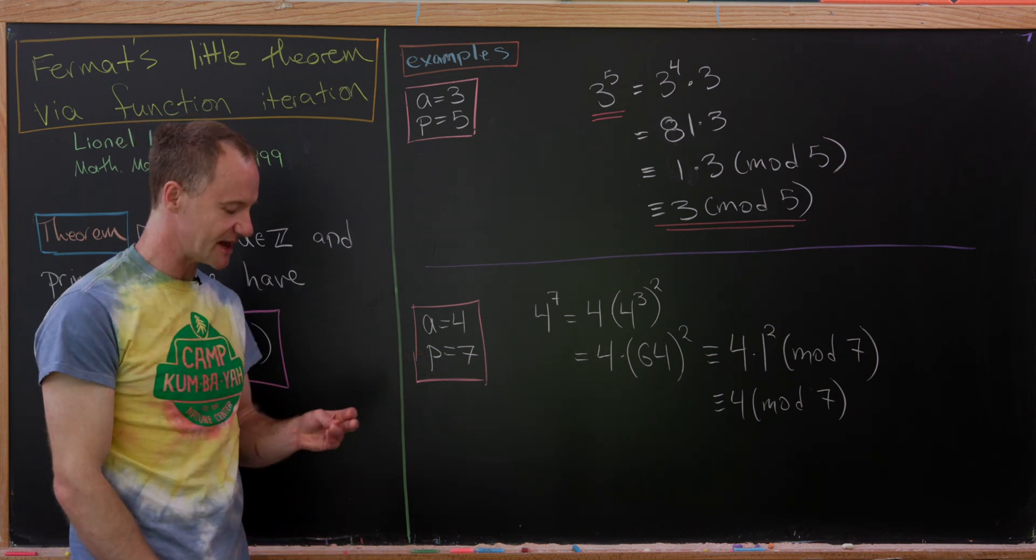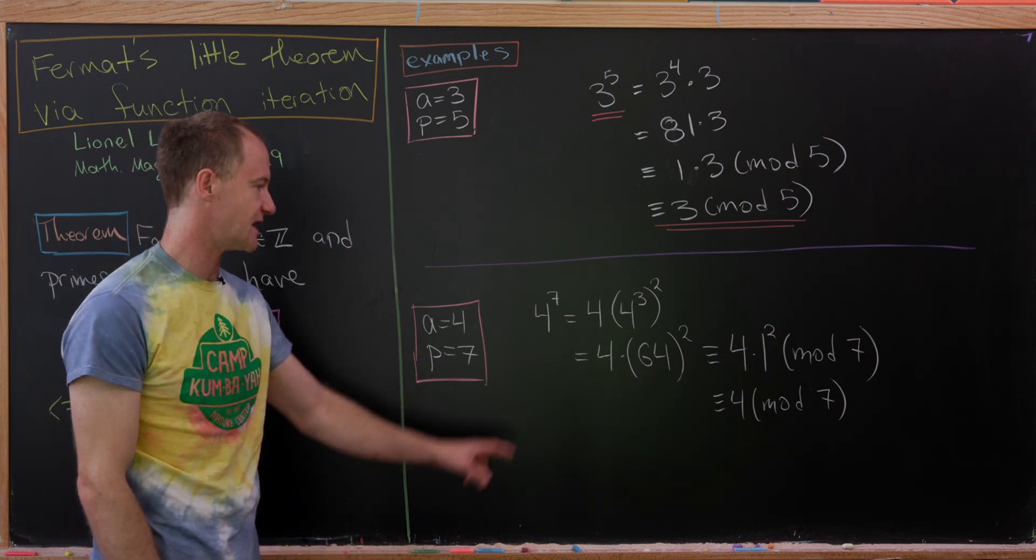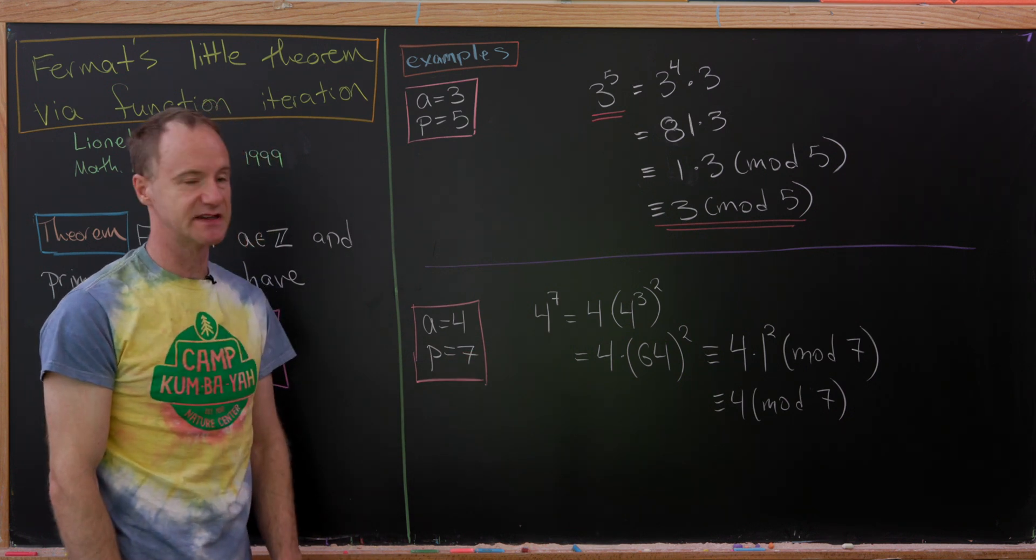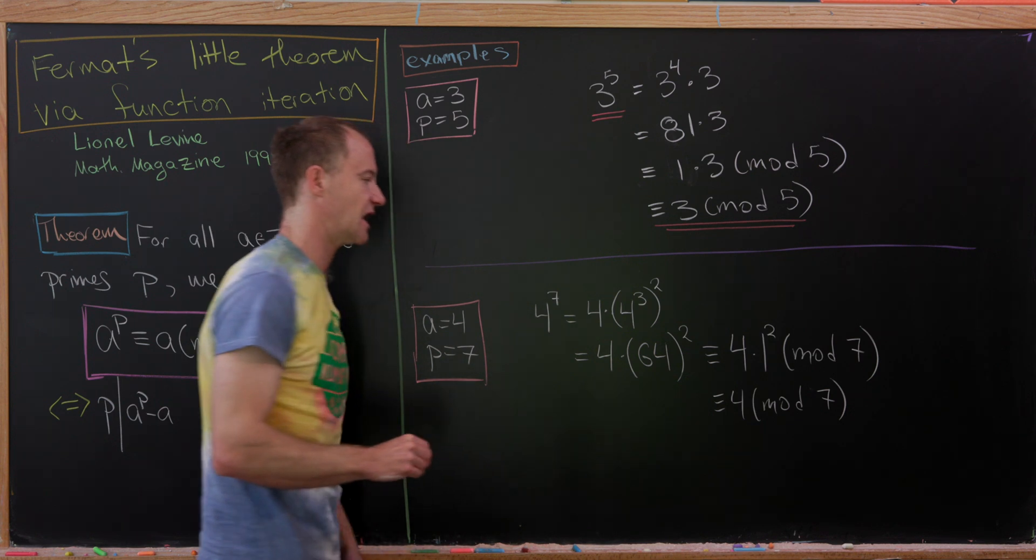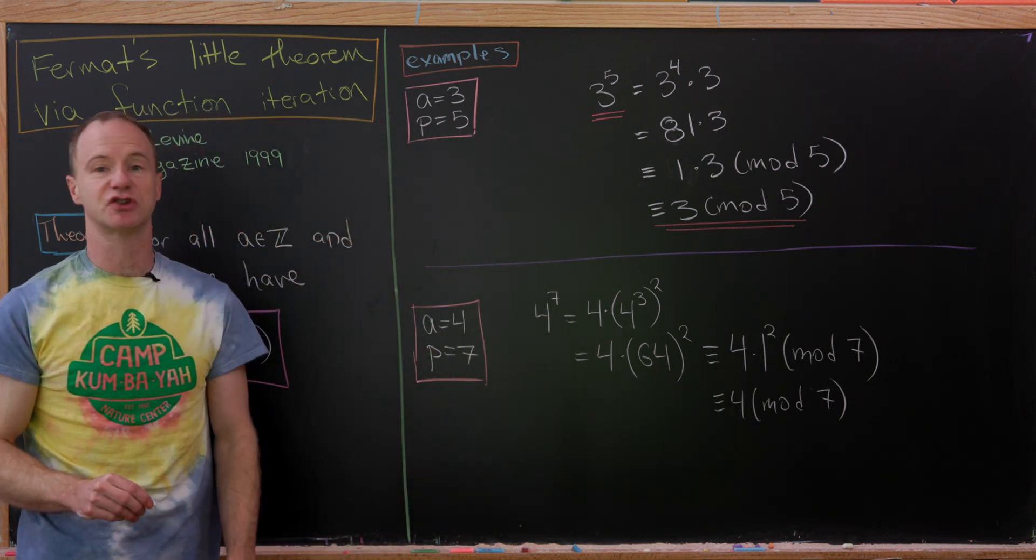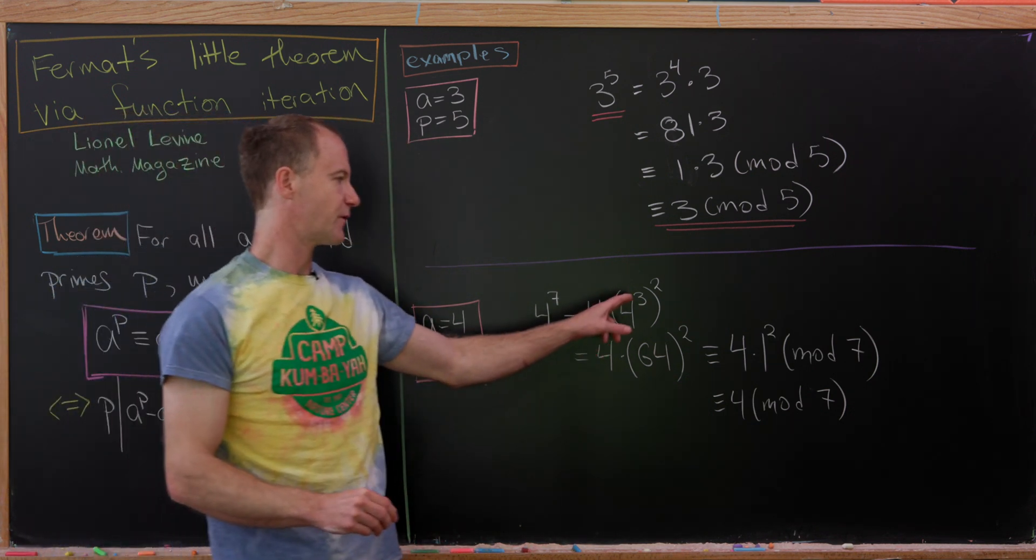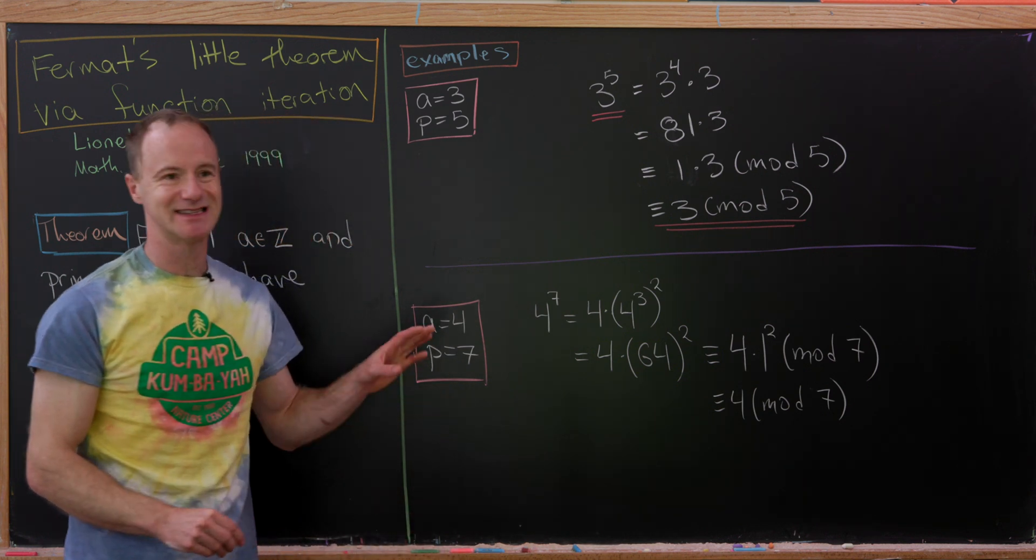Okay, so let's look at one more example. This will be the case when a is equal to 4 and p is equal to 7. So we have 4 to the 7, which we can decompose as 4 times 4 cubed squared. But notice 4 cubed is equal to 64.